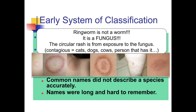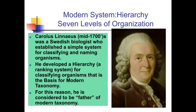For example, ringworm is not a worm—it is a fungus. The circular rash comes from exposure to the fungus, and it's contagious among cats, dogs, cows, and people. Common names simply did not describe species accurately. Then along came a Swedish biologist named Carlos Linnaeus in the mid-1700s, who established a simple system for classifying and naming organisms.